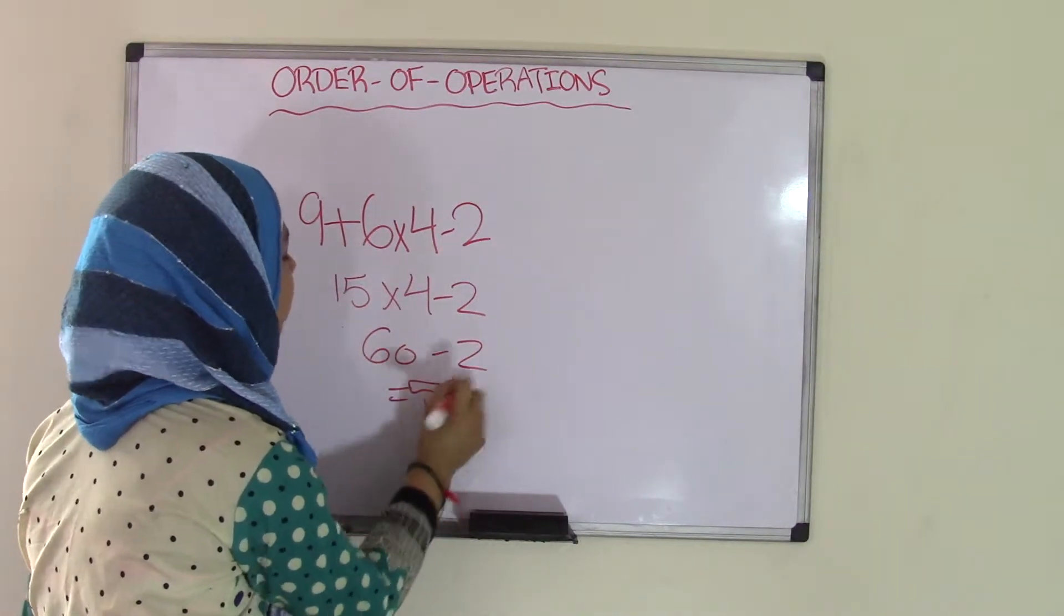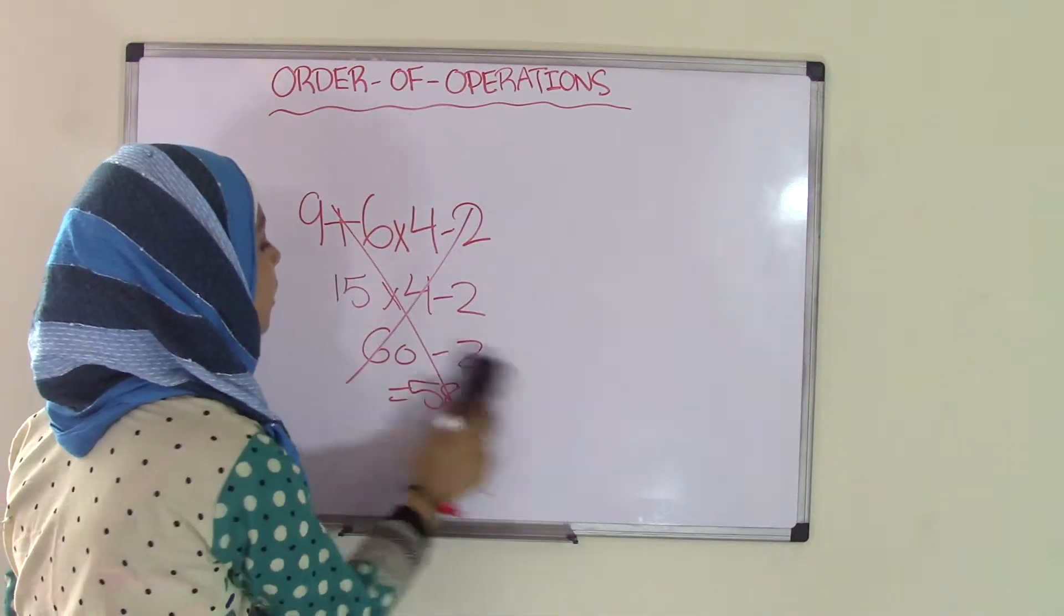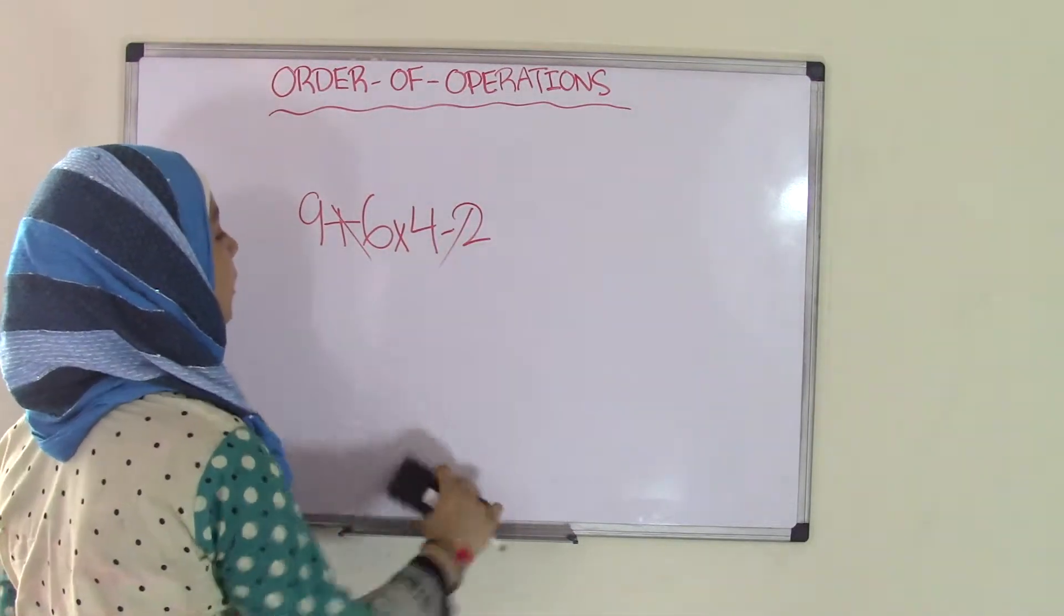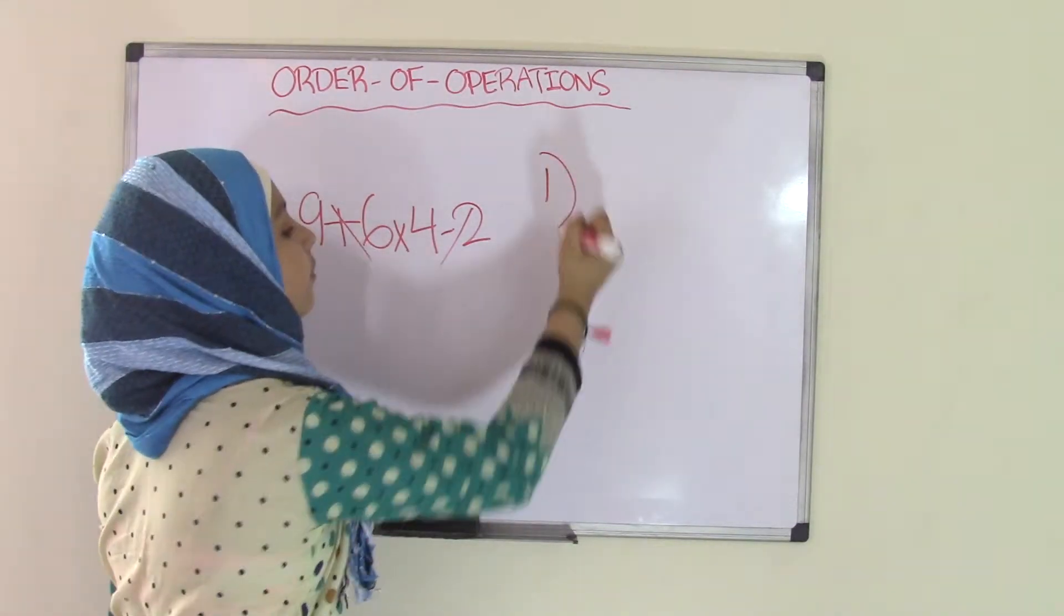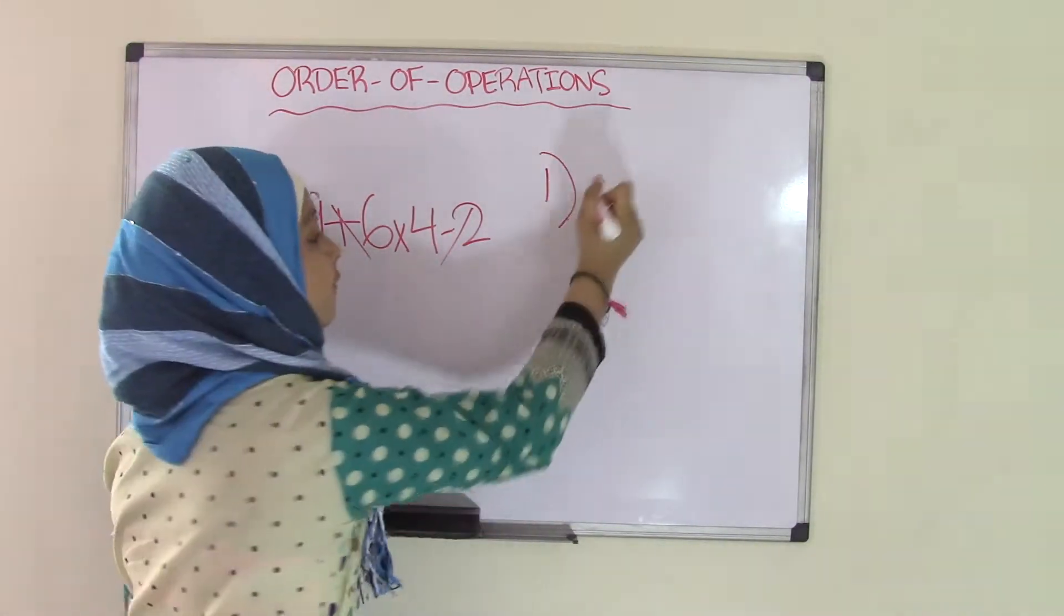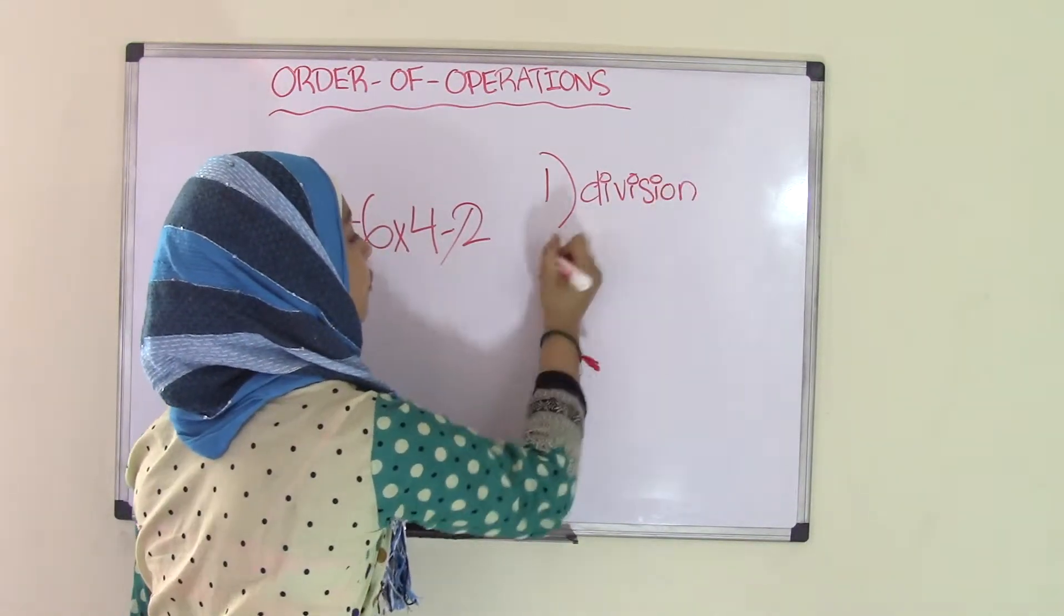Well, guess what? That is not the right way to do it. This would be wrong. The real way is to use the order of operations. So what you have to do is we're going to list the order of operations here. So first is division. So in any expression, you have to use division first.